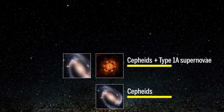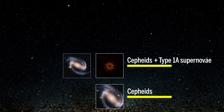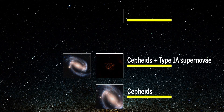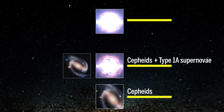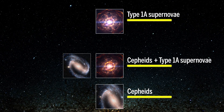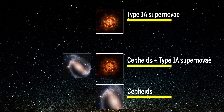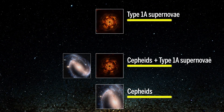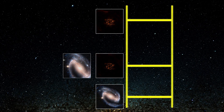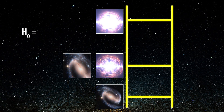These exploding white dwarf stars also have an intrinsic brightness. After calibrating these supernovae, astronomers can then move out to a third rung, to even more distant galaxies that only contain supernovae. Linking all these measurements, a recent study has pinned the Hubble constant at 73.